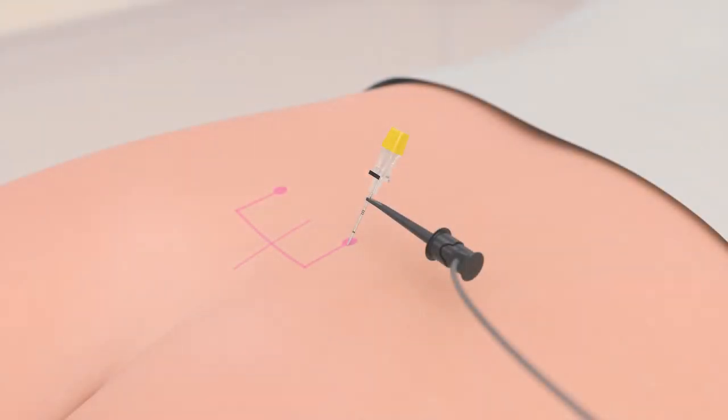After an initial response is obtained, the needle should be advanced a half a centimeter and tested again. This is repeated for a total of 2 centimeters or until the response is lost. Then the needle is retracted slightly until response is evident again.